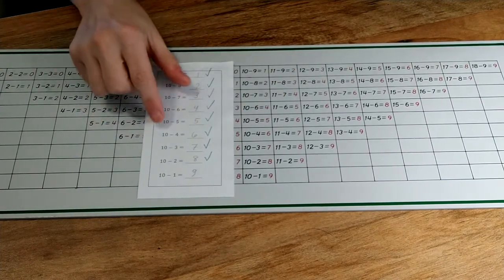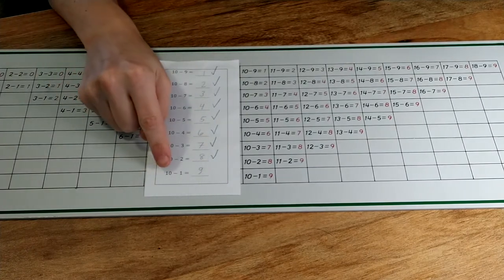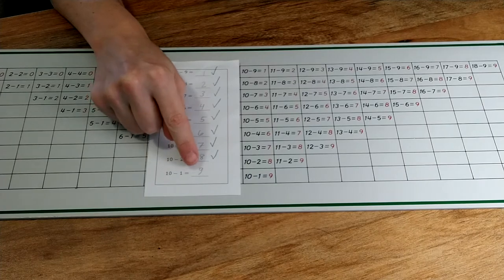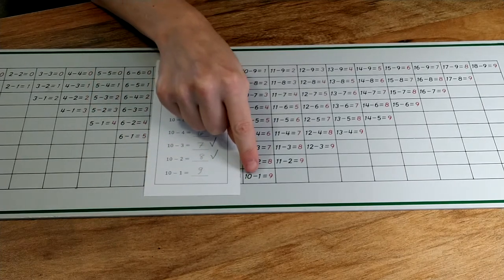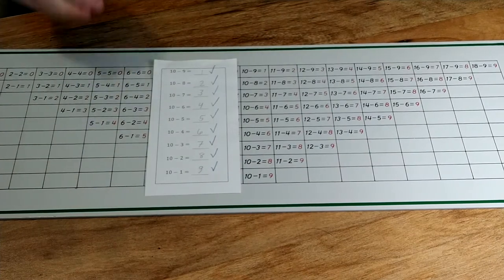Ten minus one equals nine. Ten minus one equals nine. They're all the same. This is the final step in your strip board work.